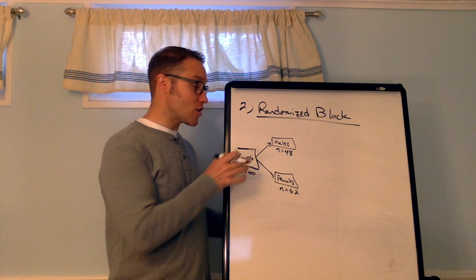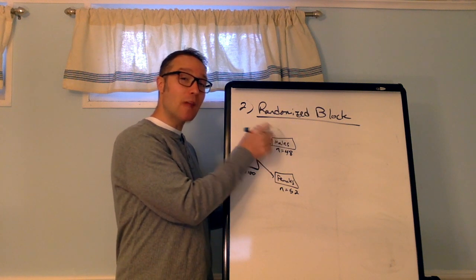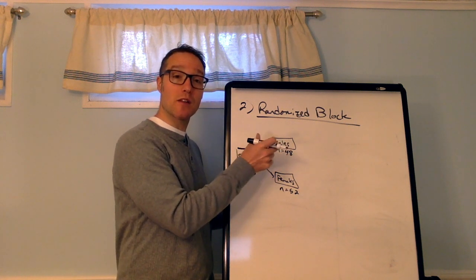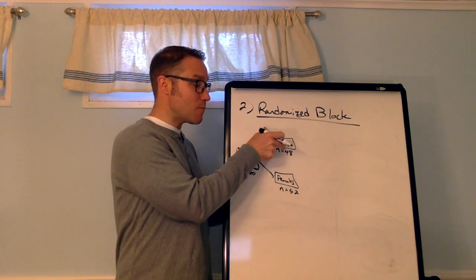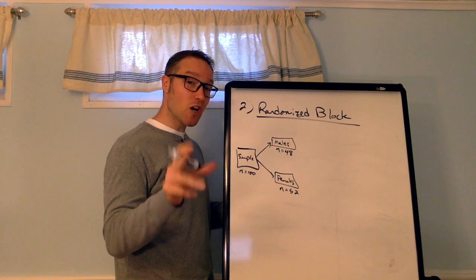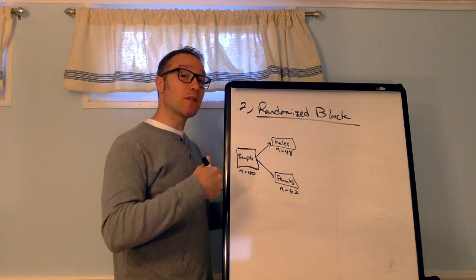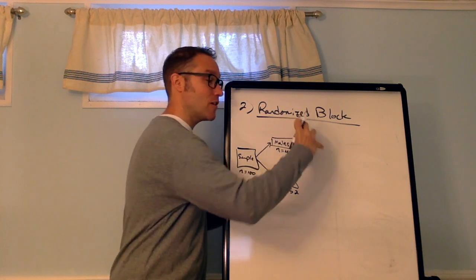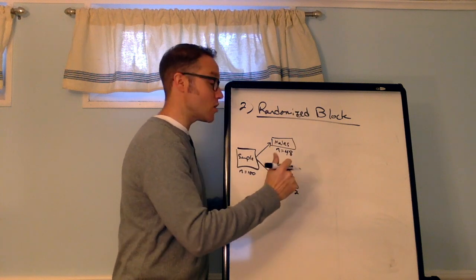Now comes the randomization. So, basically, within each block I'm going to do a completely randomized experiment. So, this is like a microcosm. It's basically two experiments in one. So, this diagram is going to get a little bit complicated. But, what I want you to notice is if you look back at the completely randomized design, I can kind of fit two of them on the board here. And that's what I'm going to do.